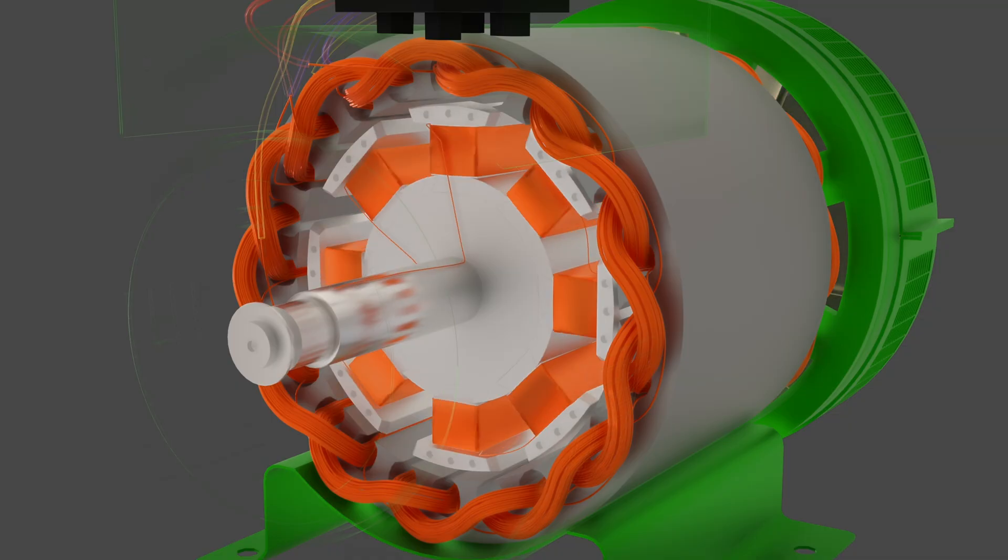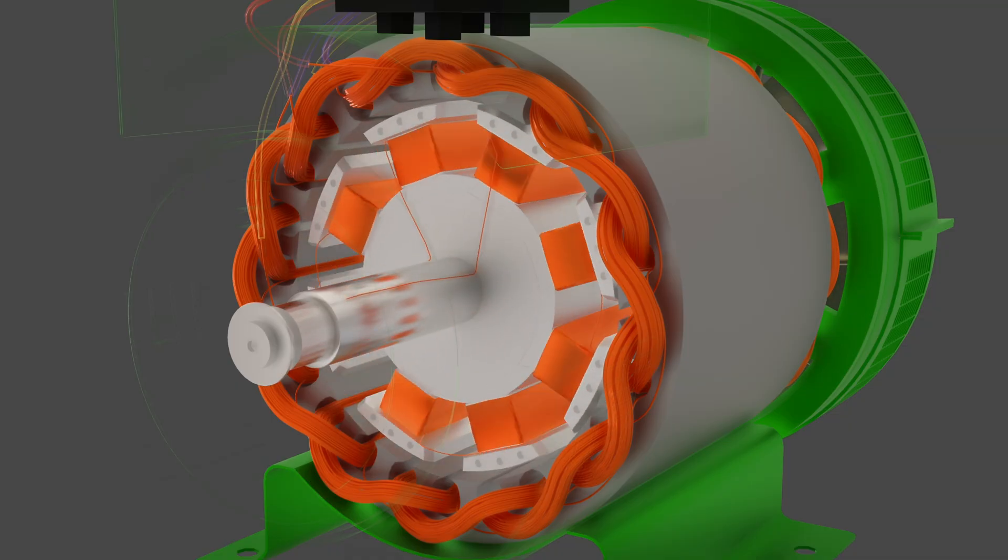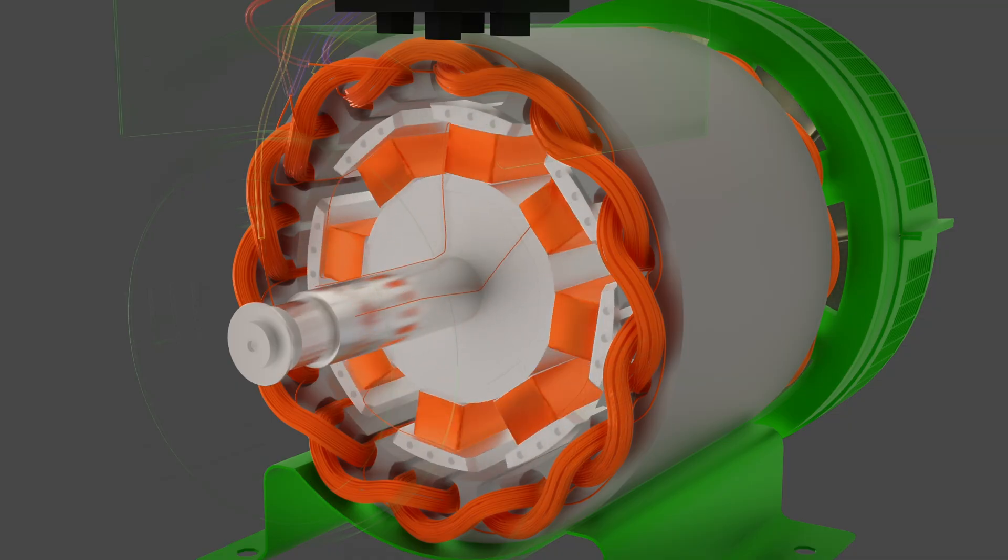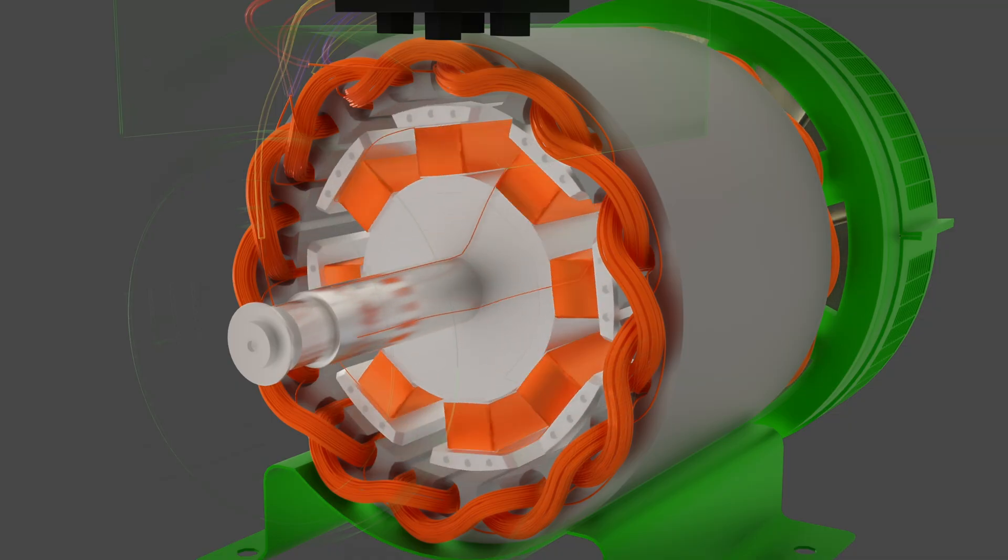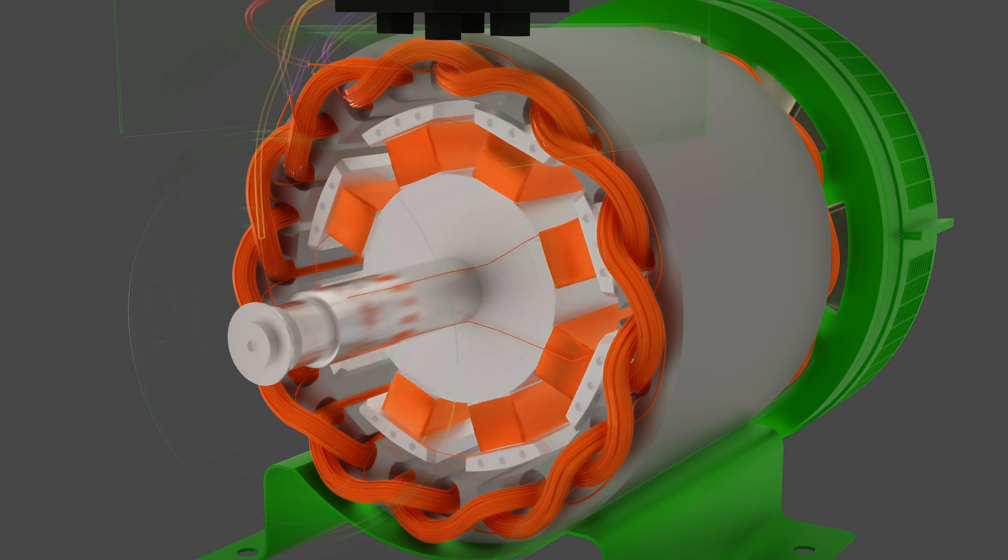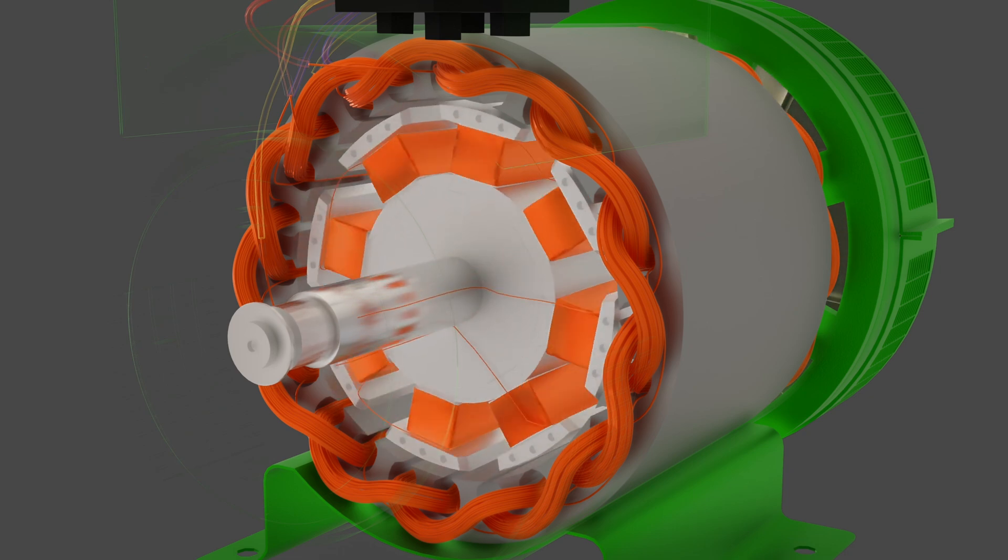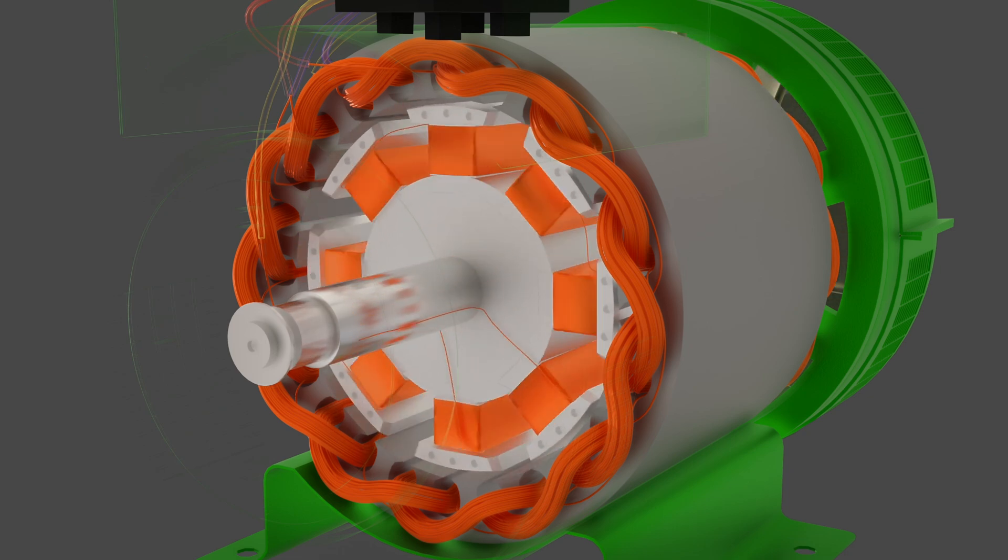How is it possible to supply current without any physical contact? If we carefully observe the generator, power is generated in the rotor without any physical contact. The same principle is used in brushless excitation.